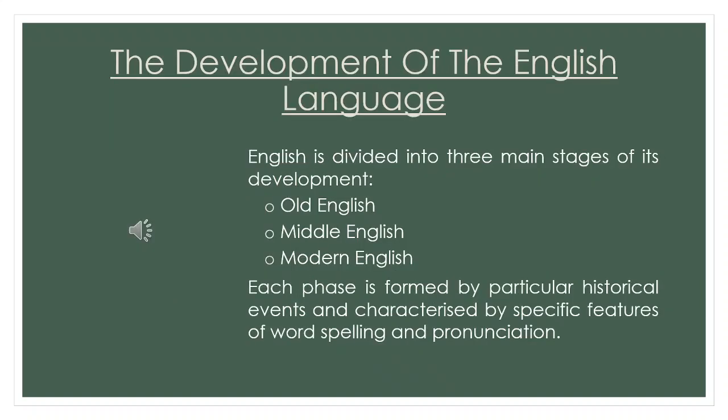Let's look at the development of the English language. English is divided into three main stages of its development: Old English, Middle English, and Modern English. Each phase is formed by particular historical events and characterized by specific features of word spelling and pronunciation. And now you will listen to the audio file where you can find out more about the development of English.